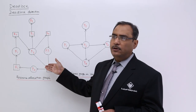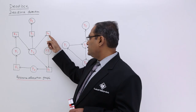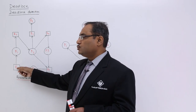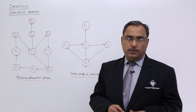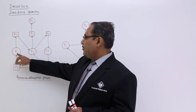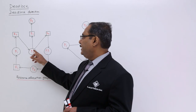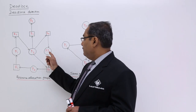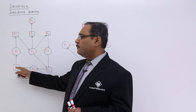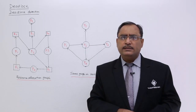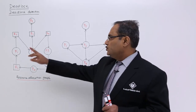Let me check whether this graph has any cycle. Moving through the directed edges, yes, there is a closed path — a cycle exists. But I cannot ensure whether deadlock is occurring or not. P1 has got R1 and is waiting for R2; P2 has got R2 and is waiting for R3, R4, and R5; P3 has got R4 but is waiting for R5; P4 has got R5 but is waiting for R1. So everyone is waiting for one or more resources — cycle is there.